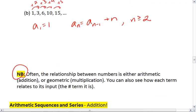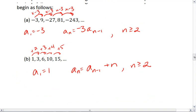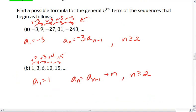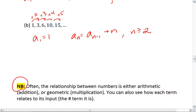A good thing to note is that often the relationship between numbers is either arithmetic, which means addition, or geometric, which means multiplication. Like we saw above, when we have the multiplication, that becomes easy to deal with. You might also get something that relates to n. And it helps to see how each term relates to its input.